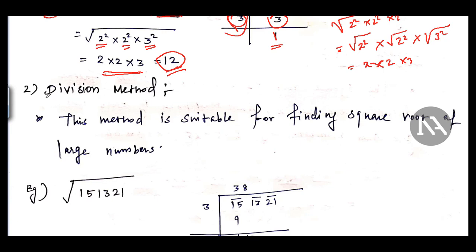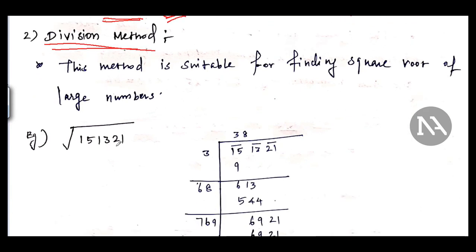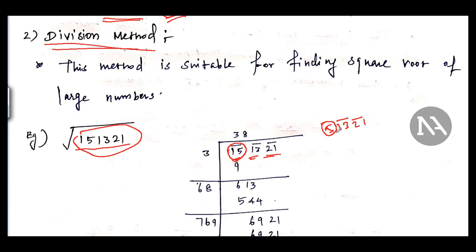The division method can be used mainly for large numbers. For example, find the square root of 151321. First, pair the digits from right to left in groups of two: 15 | 13 | 21. If a single digit is left at the end after pairing, keep it as is. We start with the first pair or group on the left.